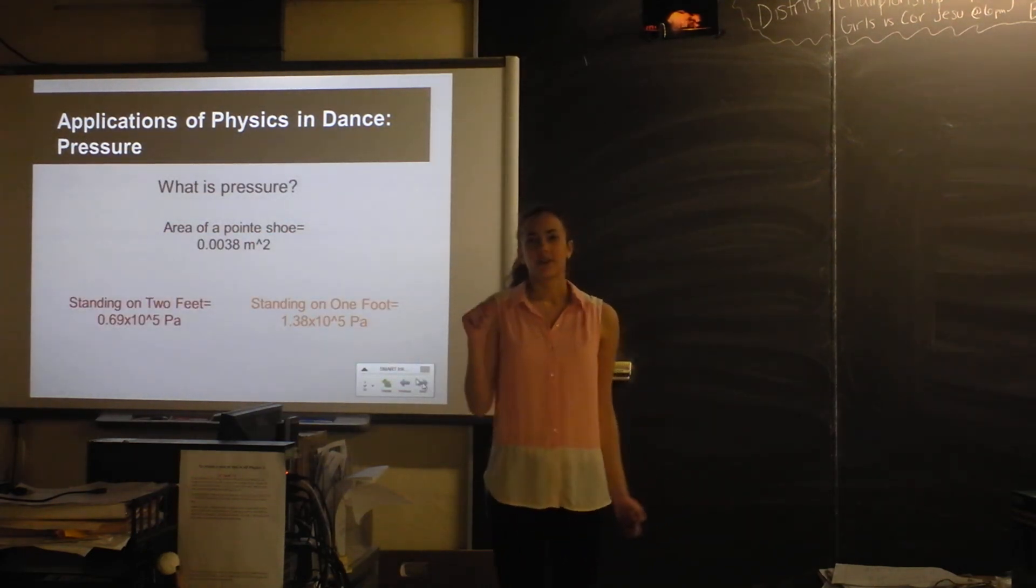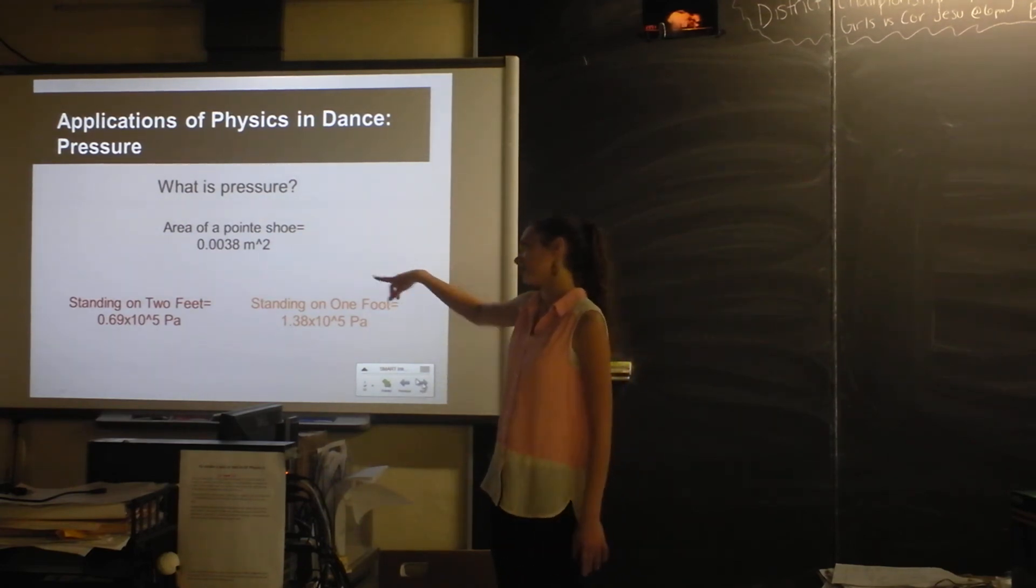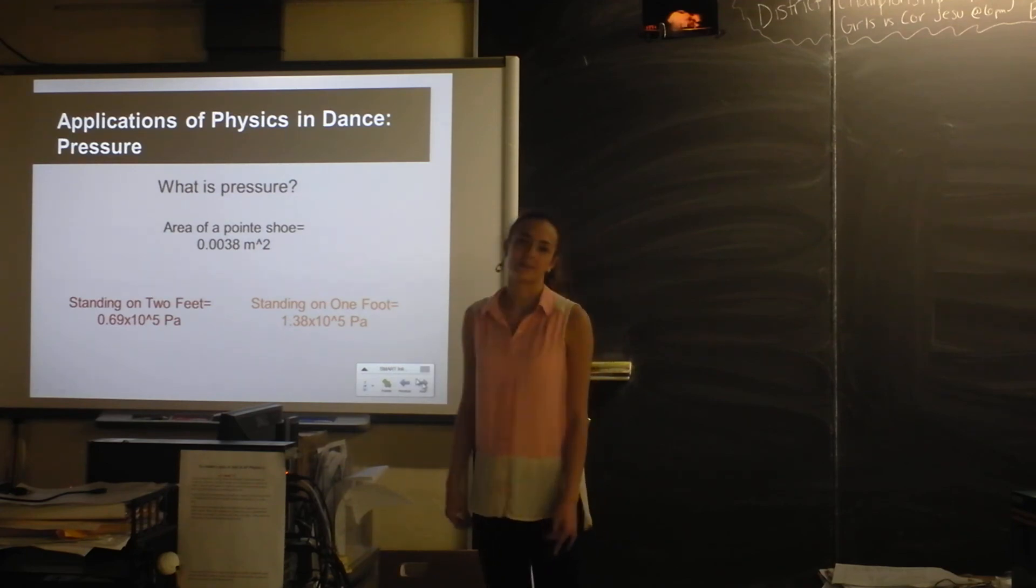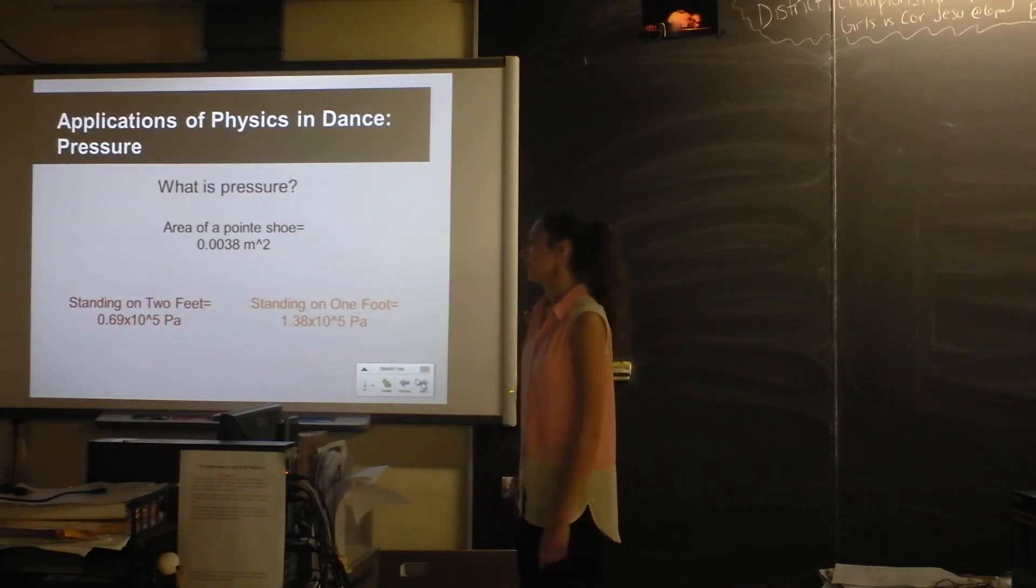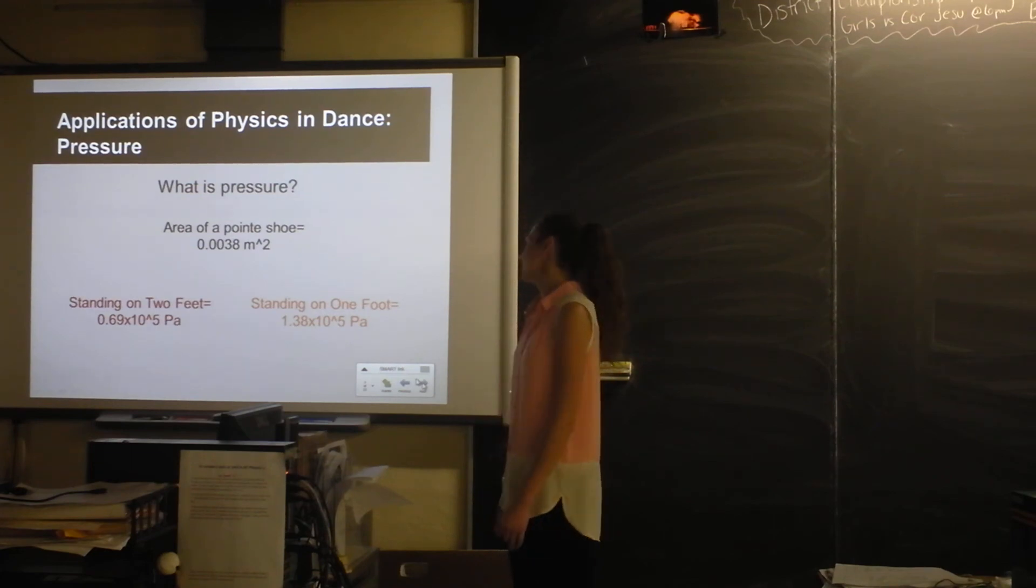I also wanted to know what the pressure on my toes was when I'm dancing. So what's the equation for pressure? Force over area. So I weigh about 530 newtons, and the area of a pointe shoe is about 0.0038 meters squared. So that's a lot of pressure on my feet. When I'm standing on two feet, it's about 0.7 times 10 to the fifth pascals. And if I'm standing on one foot, it's about 1.4 times 10 to the fifth pascals. So that's why a lot of dancers have broken toes.